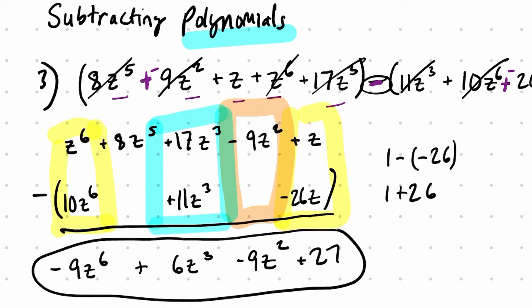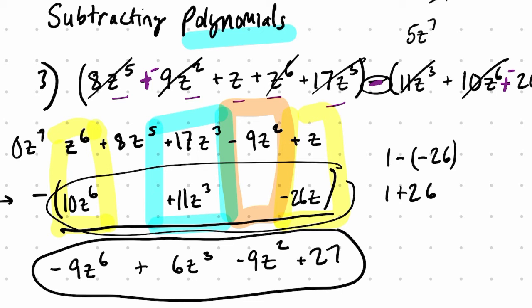Now, in the last video, I put those placeholders in, zeros. In this case, I knew I didn't need to do that because anything that the second polynomial had was also included in the first already. For example, if the second polynomial had a term like 5z to the seventh, it would be confusing. Where would I place it here? So if that's happening, I would add a 0z to the seventh here in the front. And then I have a spot to subtract that down below.